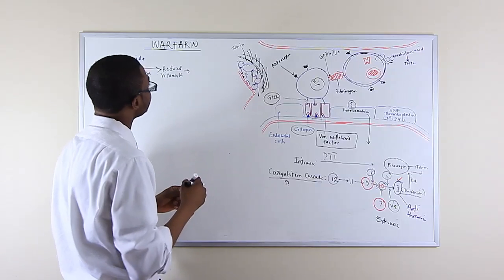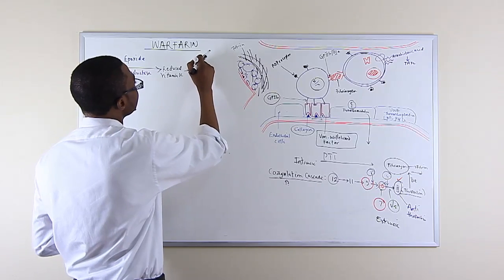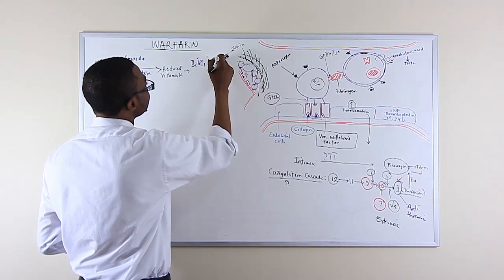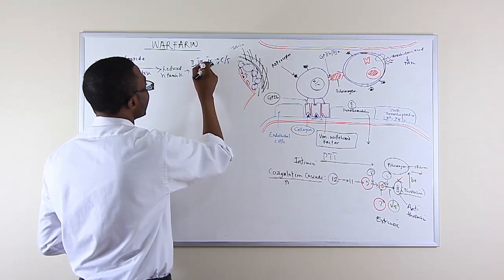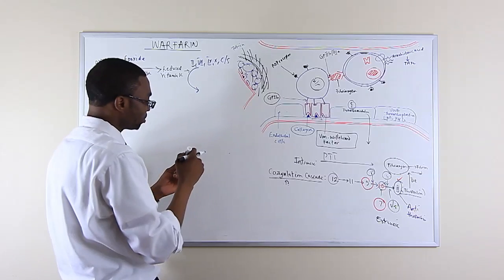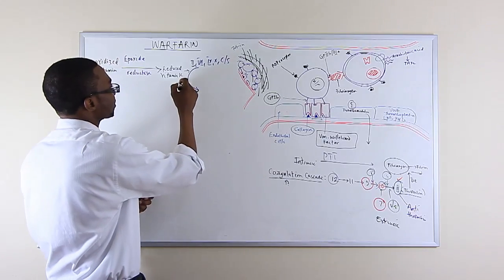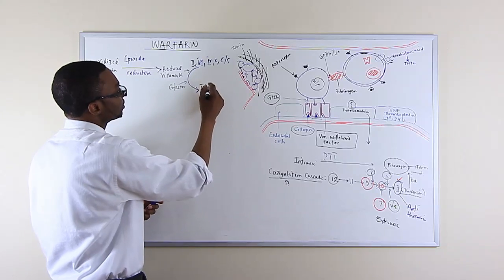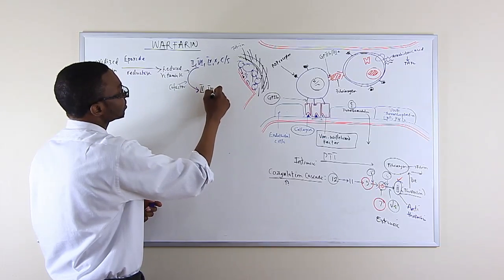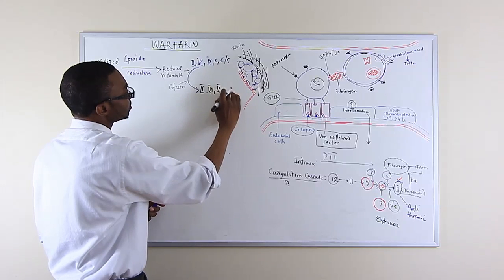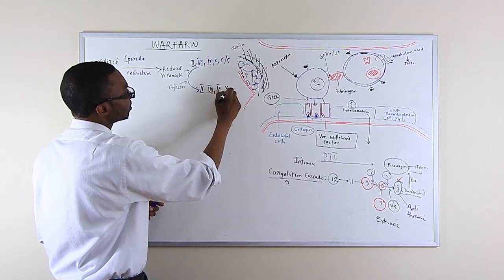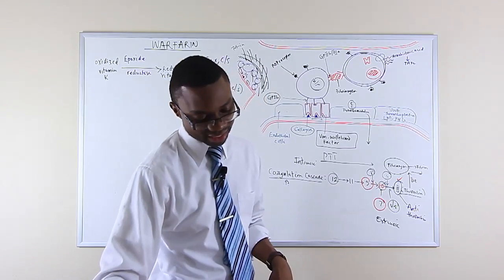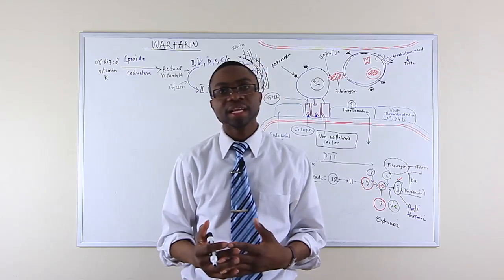So we have factor 2, factor 7, 9, 10, factor C and S. And it's going to act as a cofactor and then activate this into their regular cofactors. And that's how those cofactors are actually activated. They become more mature.